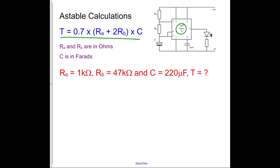Another point to note is that sometimes you see it written with the equation as RA plus 2RB times C all over 1.44. These two equations are equivalent because 0.7 is 1 over 1.44. So it doesn't matter which of the two equations you use, but I'm going to concentrate on using this one, which I've written on the board.